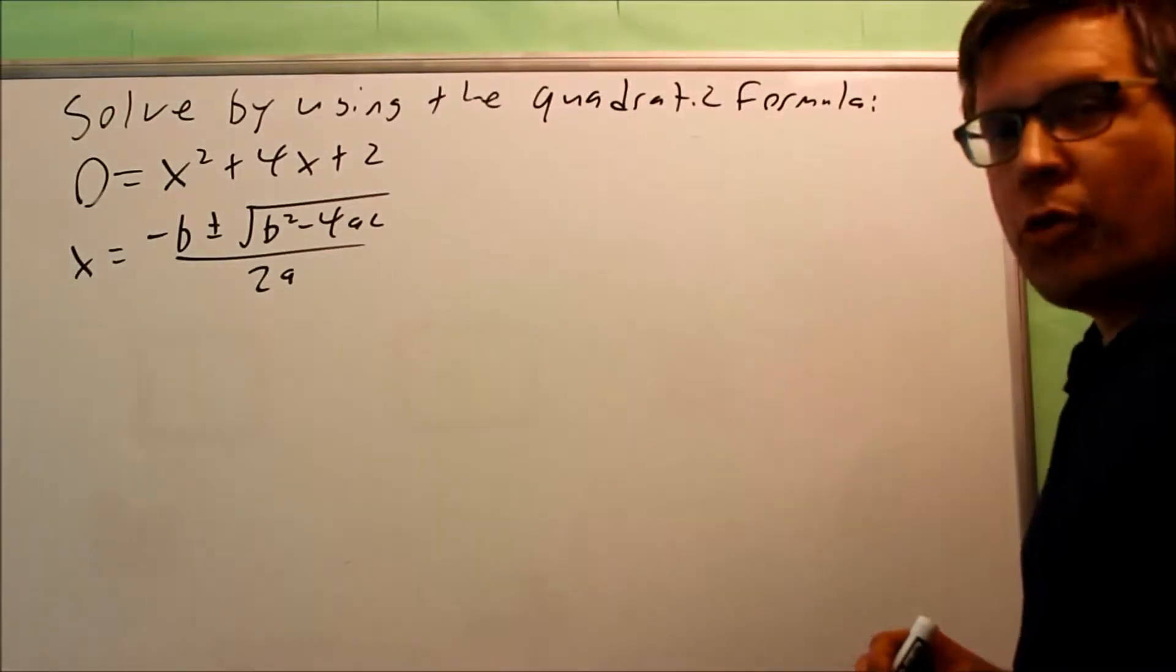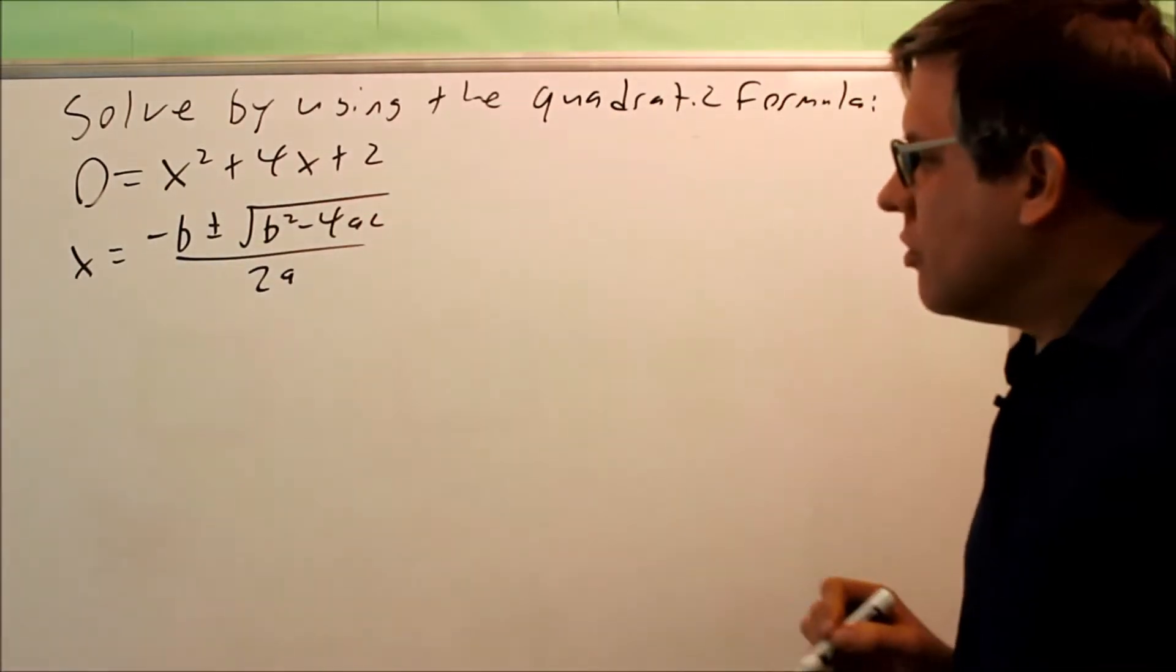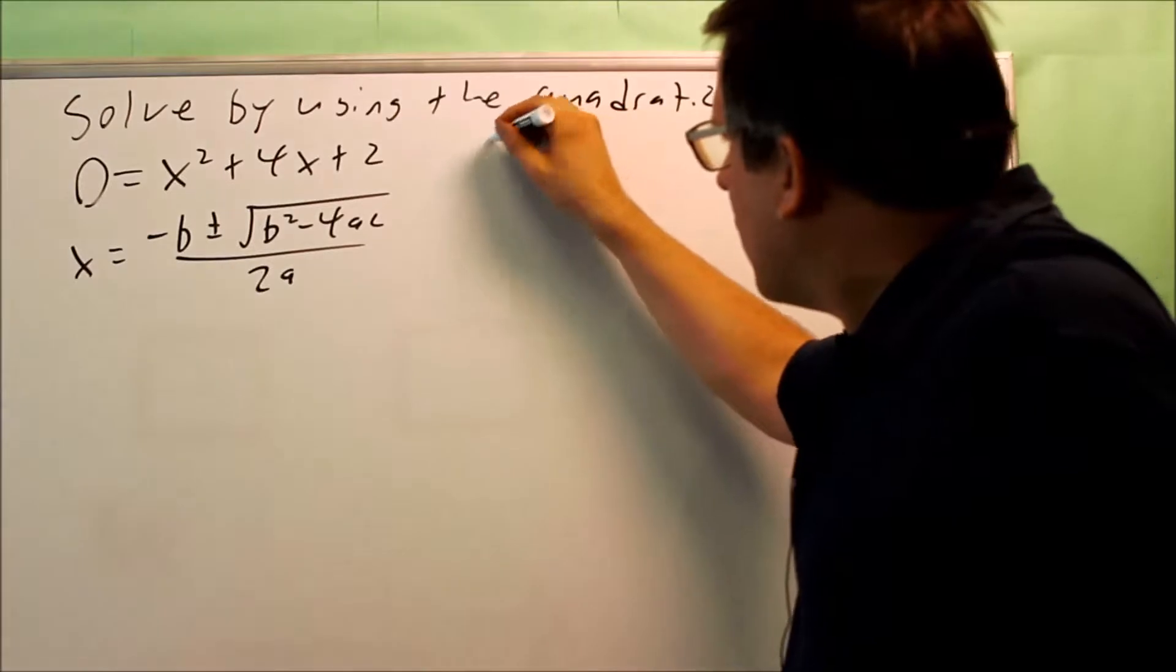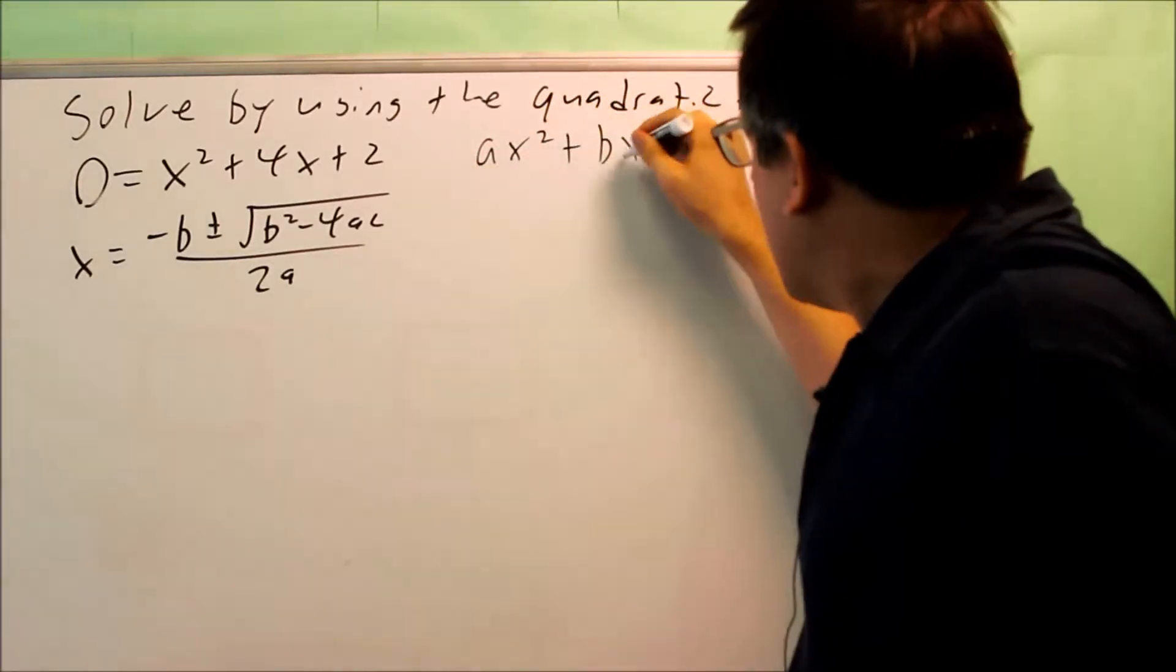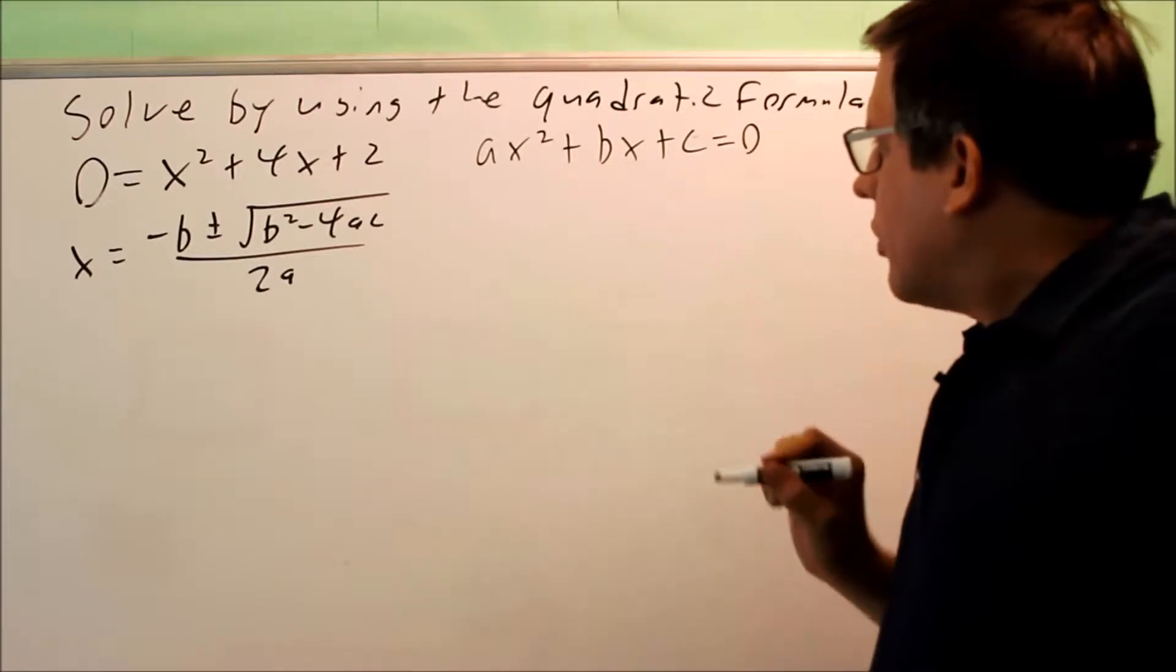We want to solve this by using the quadratic formula. So I have 0 equals x squared plus 4x plus 2. I've already written out the quadratic formula, and that's assuming that you have ax squared plus bx plus c equals 0. So we have something written in this form.